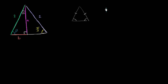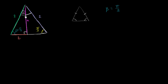So beta is also equal to pi over three radians. Now, if we know beta is pi over three and this yellow angle is pi over three radians, we can figure out what this white angle is. Let's call the measure of that angle x.